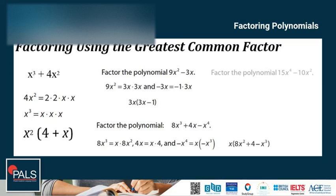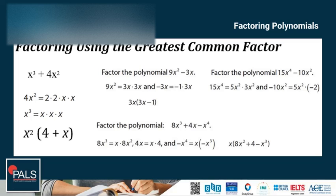Let's have another example. Factor the polynomial 15x to the 4th power minus 10x squared. Finding the shared factors: between 15 and 10, the GCF is 5; and between x squared and x to the 4th power, we have x squared. So 15x to the 4th power equals 5x squared times 3x squared, and negative 10x squared equals 5x squared times negative 2. Rewriting using the GCF, we have 5x squared times the quantity (3x squared minus 2). You can check your answer by distributing the GCF to each term inside the parentheses.